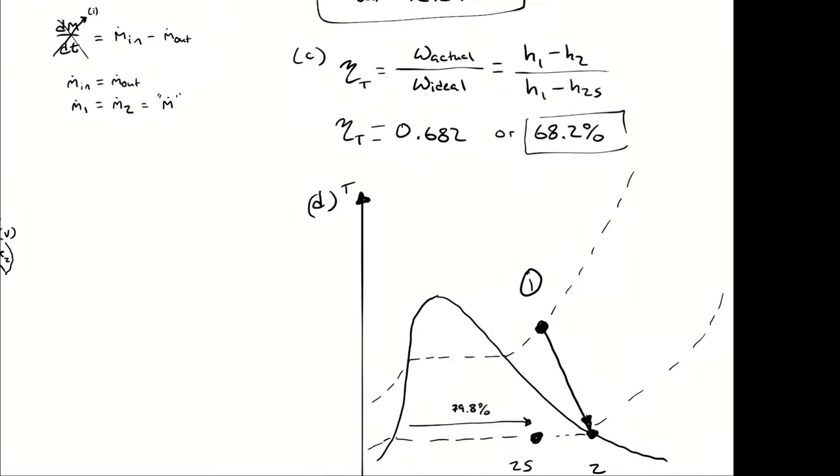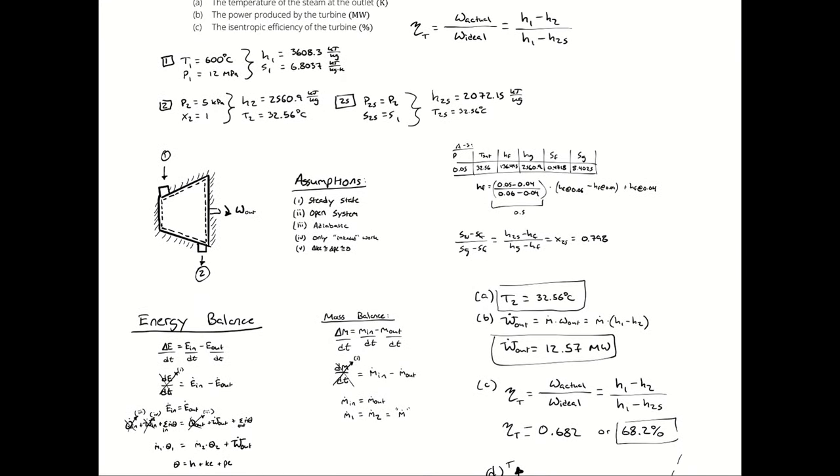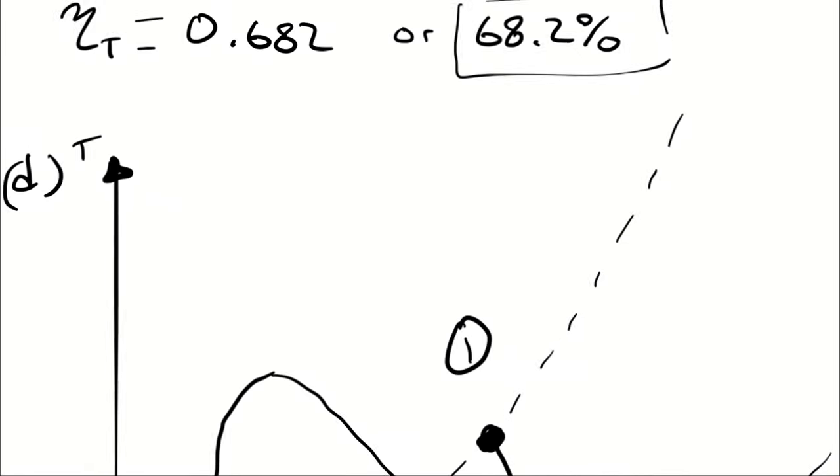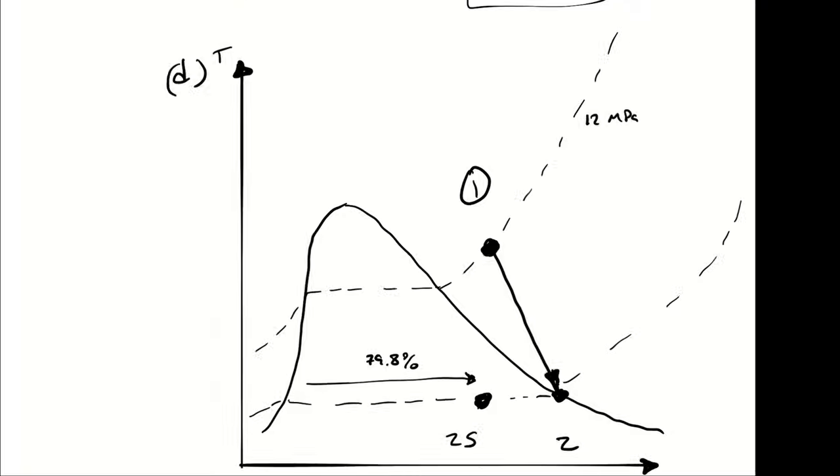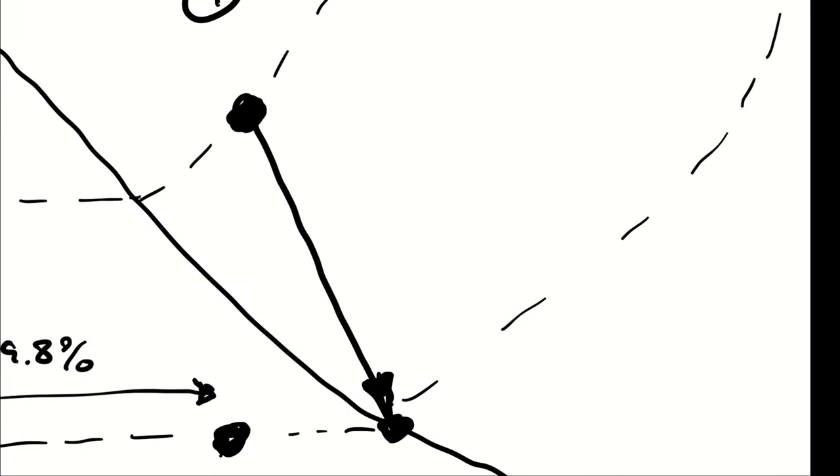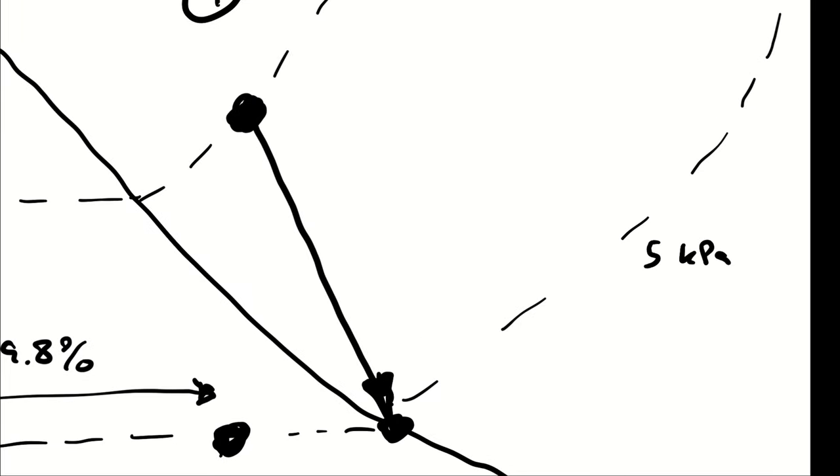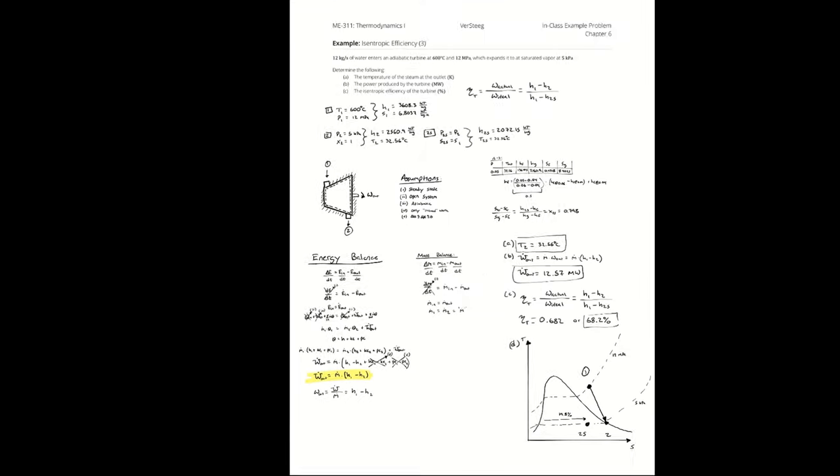I can label the pressures, that's probably good. P1 is 12 megapascals. P2 and P2S are both 5 kilopascals. And now I'm really done.